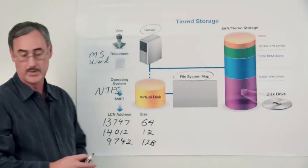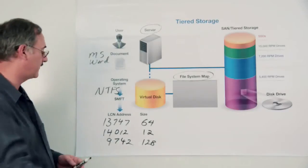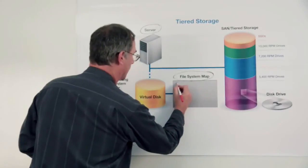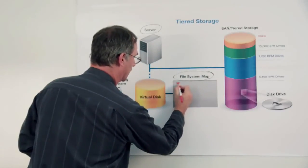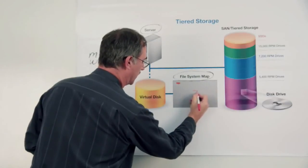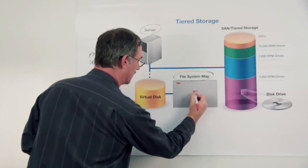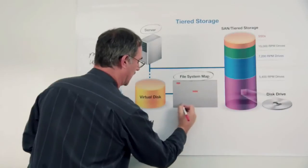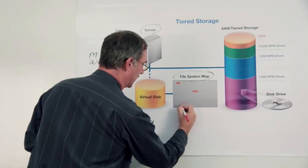And then the next location might be at 9,742 for a size of 128 clusters. So as a result, you wind up having a file that has a number of pieces. Maybe one piece here, maybe another piece right there, and then lastly maybe a third piece right there.